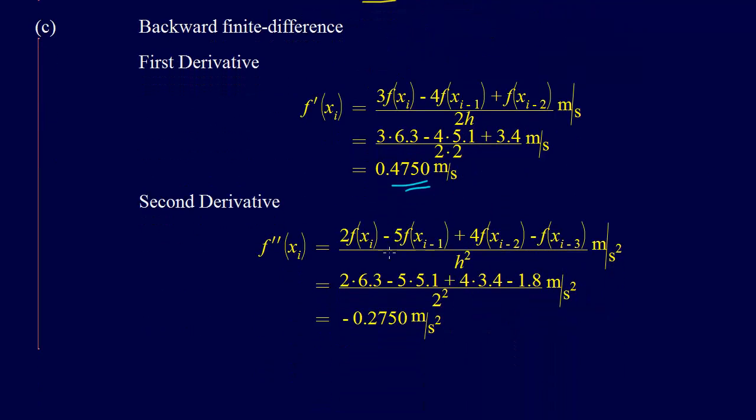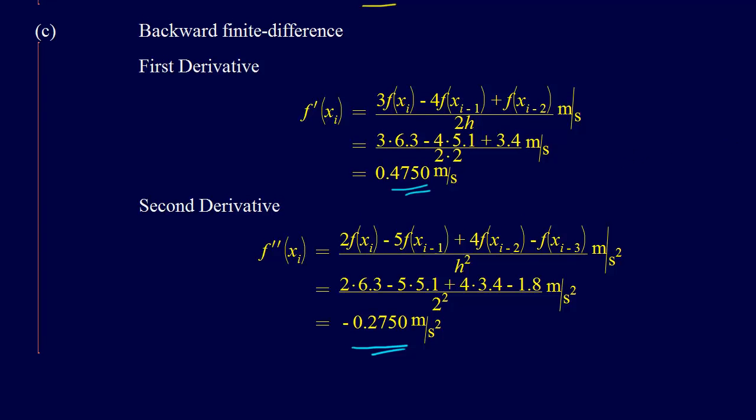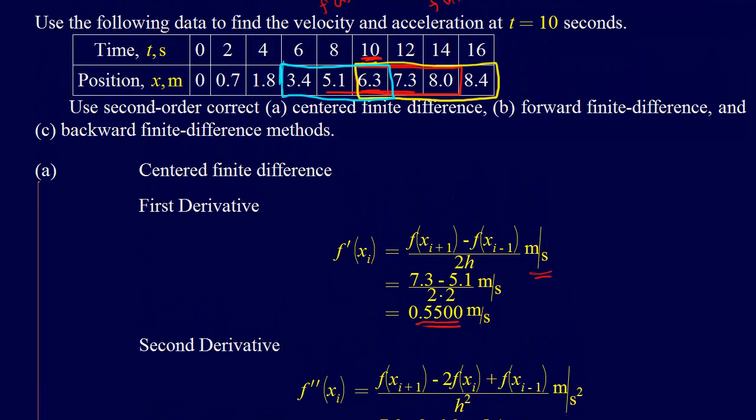For the second derivative formula, we have 2 times f at xi minus 5 times f of xi minus 1, plus 4 times f xi minus 2, minus f xi minus 3, over h squared. We're using the point, the point before, two points before, and three points before. So we got 2 times 6.3, minus 5 times 5.1, plus 4 times 3.4, minus 1.8, and we come out with minus 0.275 meters per second squared. That's the method.